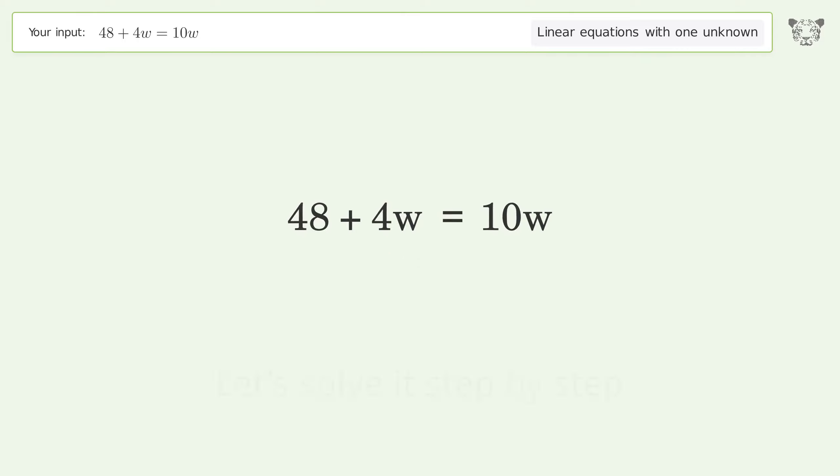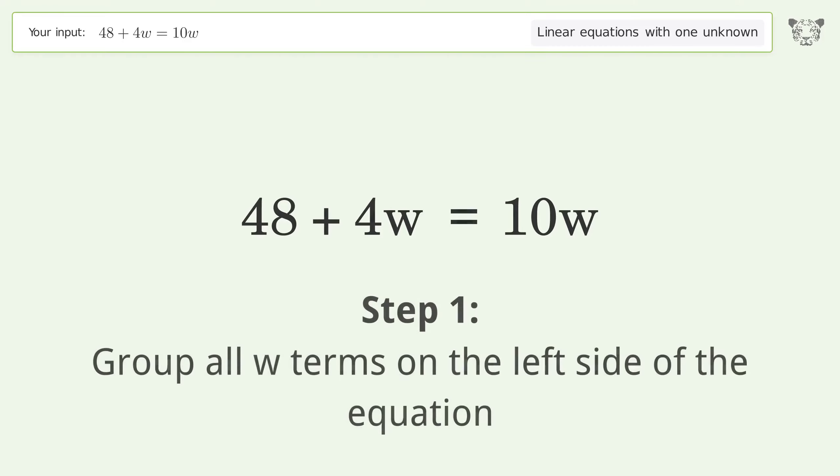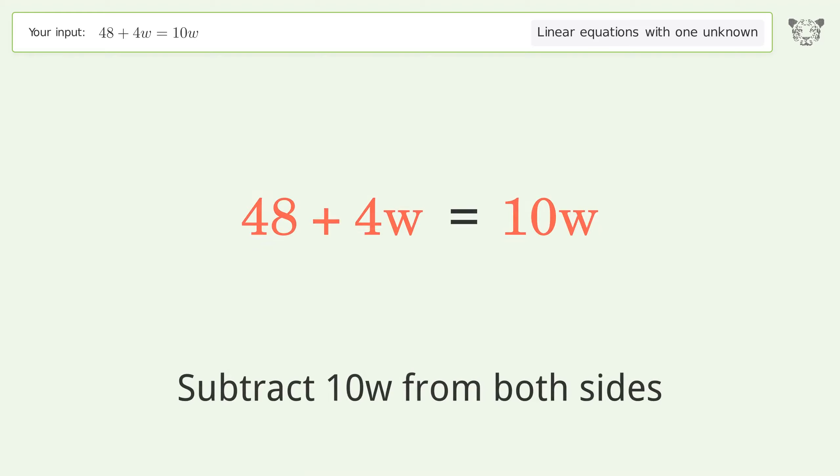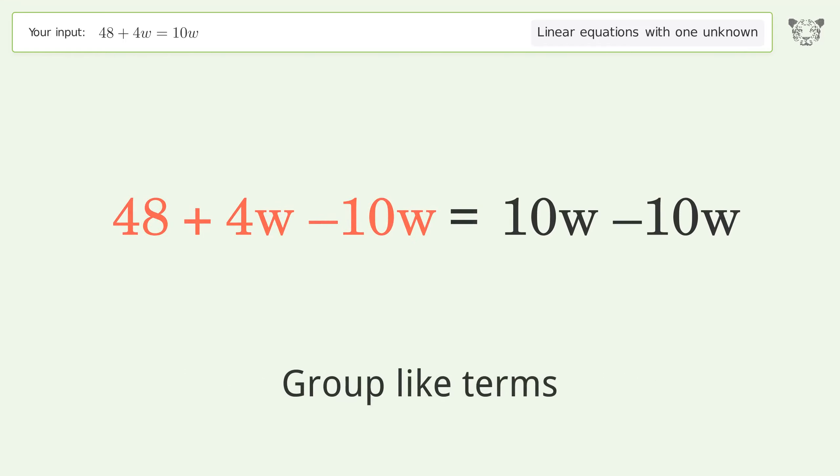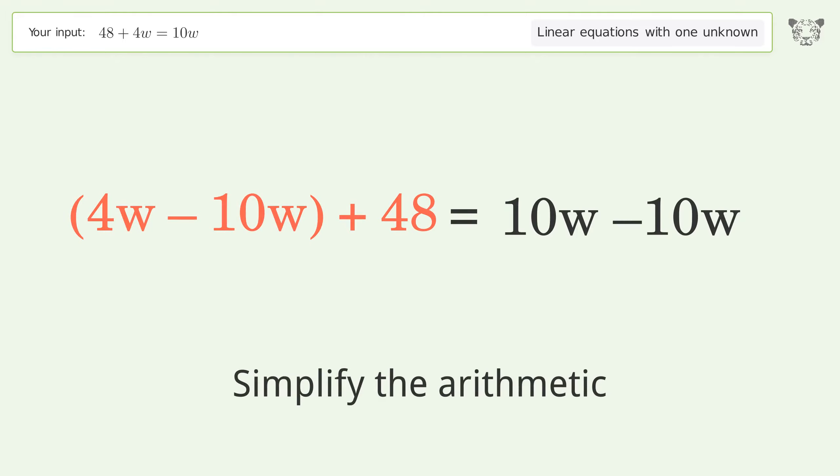Let's solve it step by step. Group all w terms on the left side of the equation. Subtract 10w from both sides. Group like terms, then simplify the arithmetic.